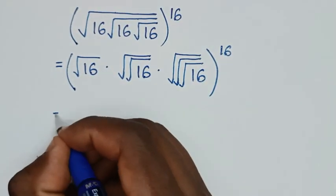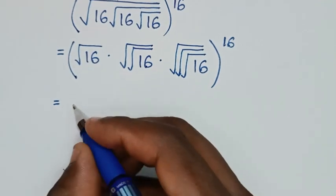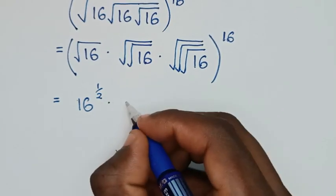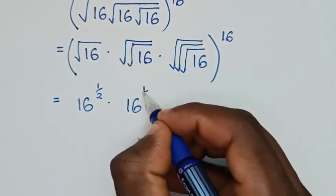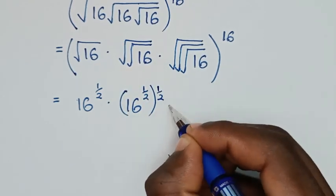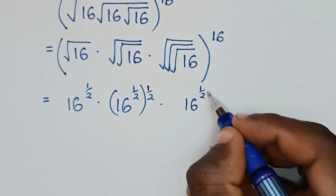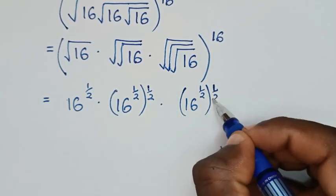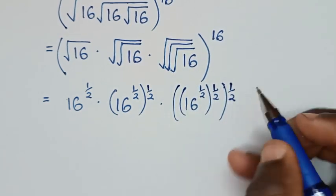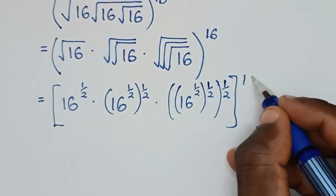In the next step, we know that square root is the same as power of a half. So it will be 16 power of a half, times 16 — power of a half, bracket, this power of a half — then times 16 — this square root is power of a half, bracket, this square root is power of a half, bracket, this square root is power of a half, bracket, this power of 16.